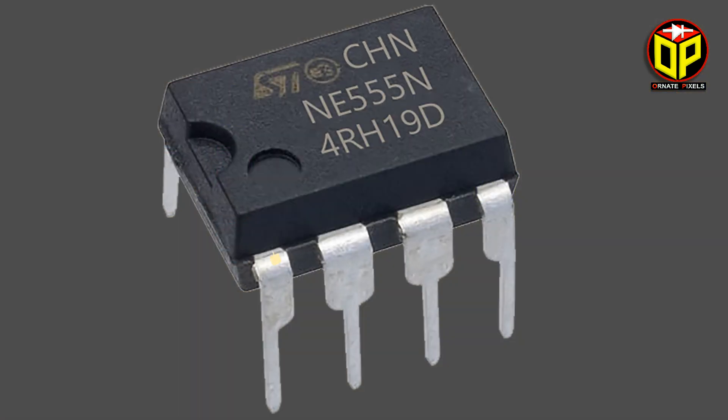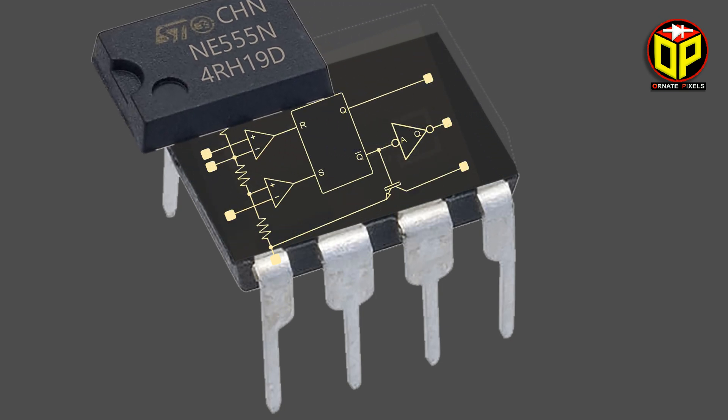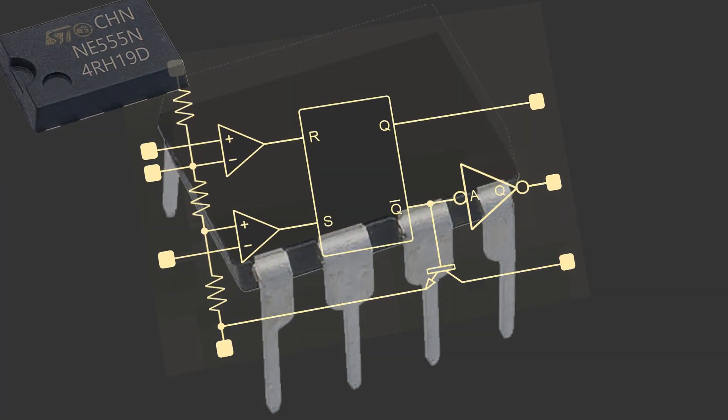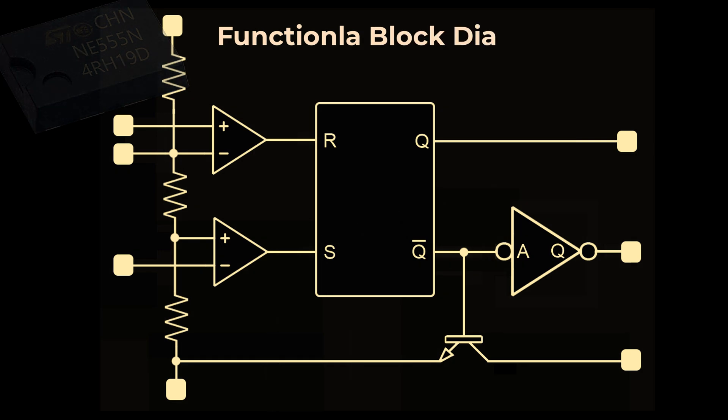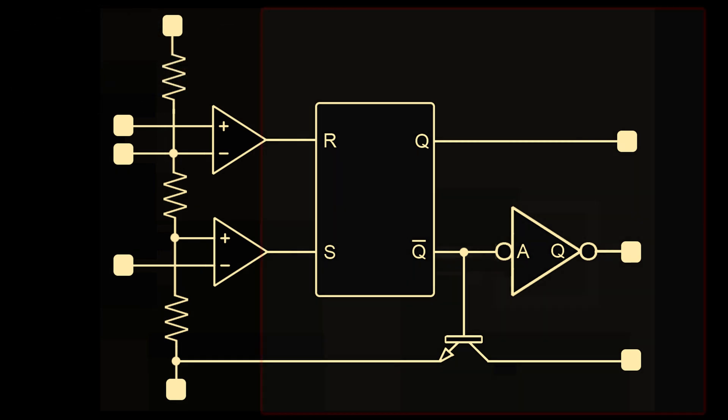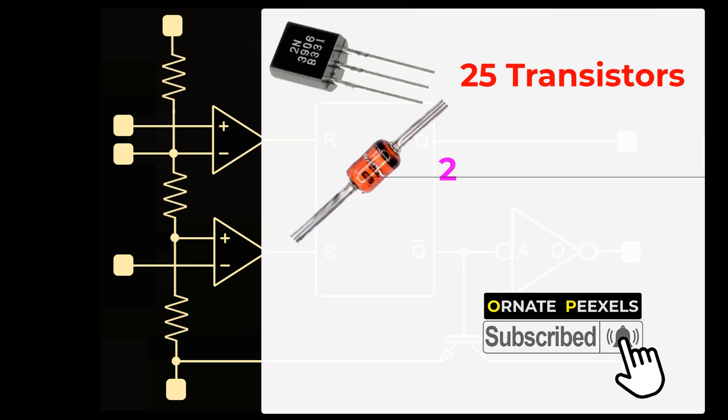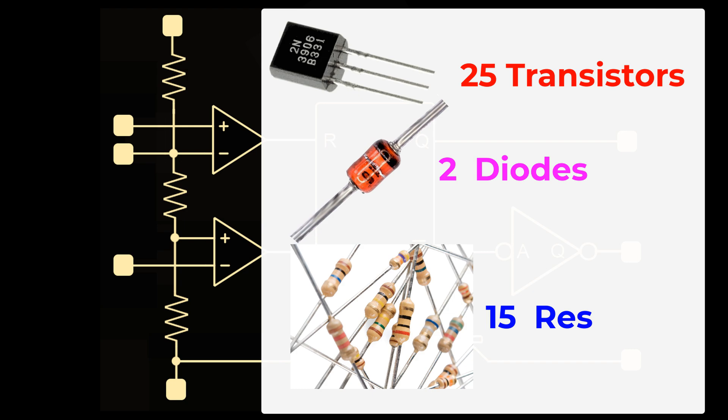Now, we try to understand how 555 IC works or its logics. So, let's see what's inside the IC. This is the functional block diagram of 555 timer IC. This diagram is integrated by 25 transistors, 2 diodes and 15 resistors.